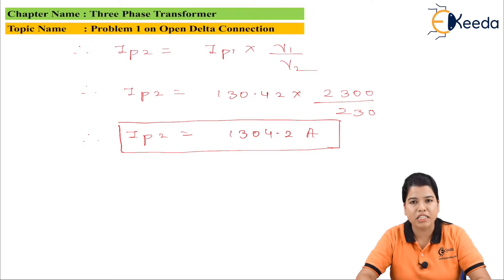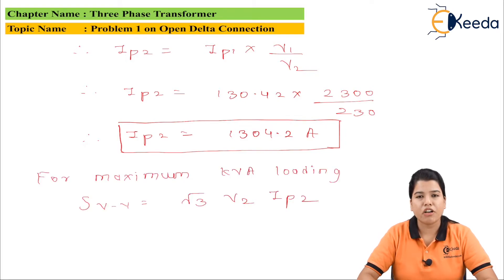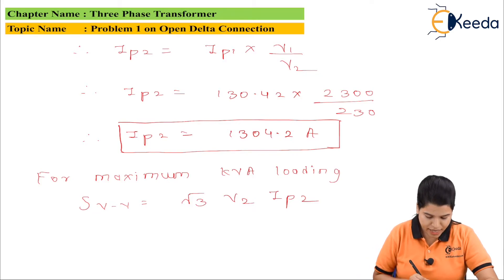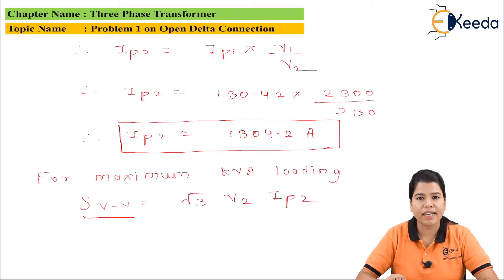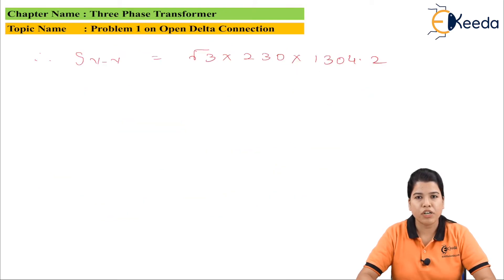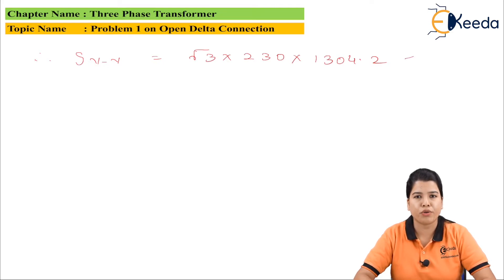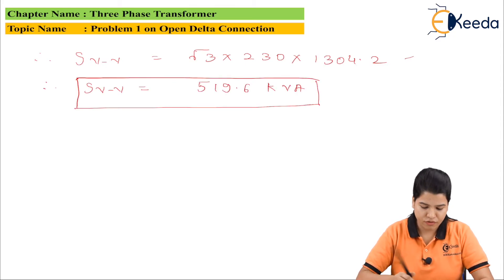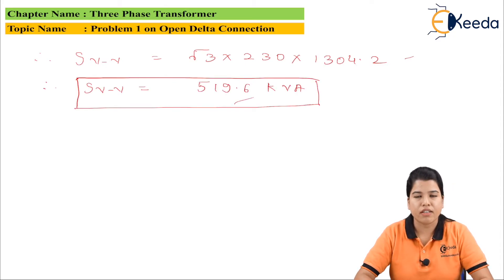Now let us find the maximum kVA loading. The formula for open delta kVA rating is: Svv = √3 · V2 · IP2. Substituting the values: Svv = √3 × 230 × 1304.2, which gives Svv = 519.6 kVA. This is the maximum kVA the two transformers can carry without being overloaded.